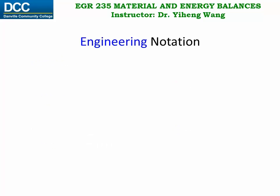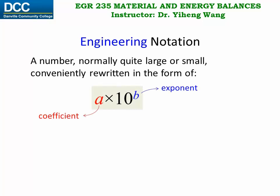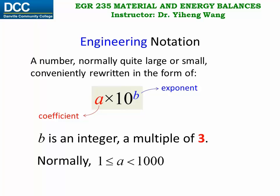Sometimes a number is rewritten in engineering notation instead. Engineering notation also has the form of a times ten to the power of b. So what is the difference between engineering notation and scientific notation? Here the exponent b not only must be an integer, but also has to be a multiple of three, for example positive six or negative nine. As a result, the coefficient a does not have to be smaller than ten, it is normally between one and a thousand.